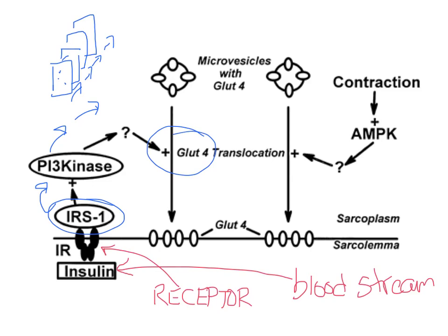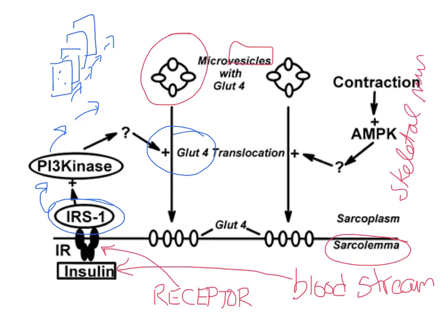GLUT4, as shown here, is in a vesicle, waiting for a signal to get to the plasma membrane — either on the sarcolemma of a skeletal muscle cell, or it could be on an adipocyte, which is a fat cell. This signaling cascade that results from the binding of insulin to the insulin receptor causes the translocation of GLUT4 in the microvesicle membrane to the plasma membrane.